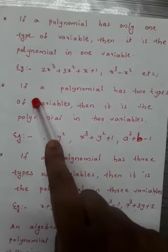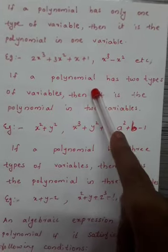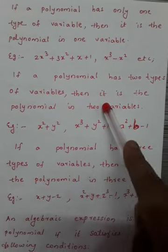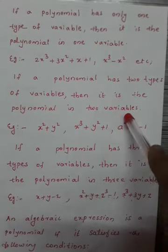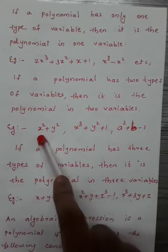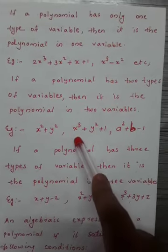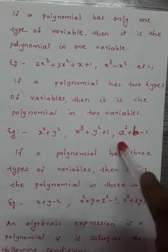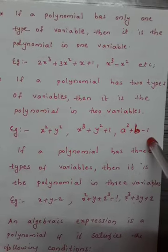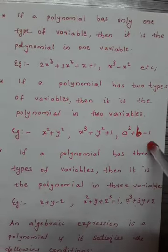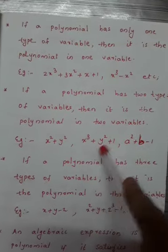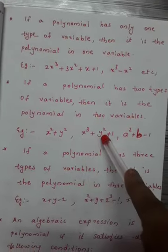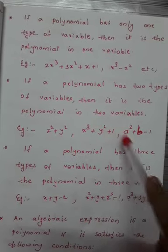If a polynomial has two types of variables, then it is the polynomial in two variables. For example, x² + y², x³ + y² + 1, x² + b - 1. In each of these expressions there are two types of variables: x and y, or a and b.